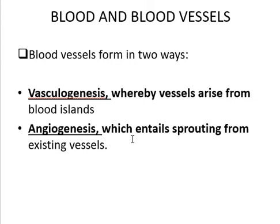Angiogenesis requires sprouting from the existing vessels. So vasculogenesis is that there will be mesoderm cells and there will be the formation of blood islands in the mesoderm. From these blood islands there will be the development of blood cells and blood vessels. But angiogenesis is sprouting from the existing vessels — vessels are developed and from there new vessels will develop.